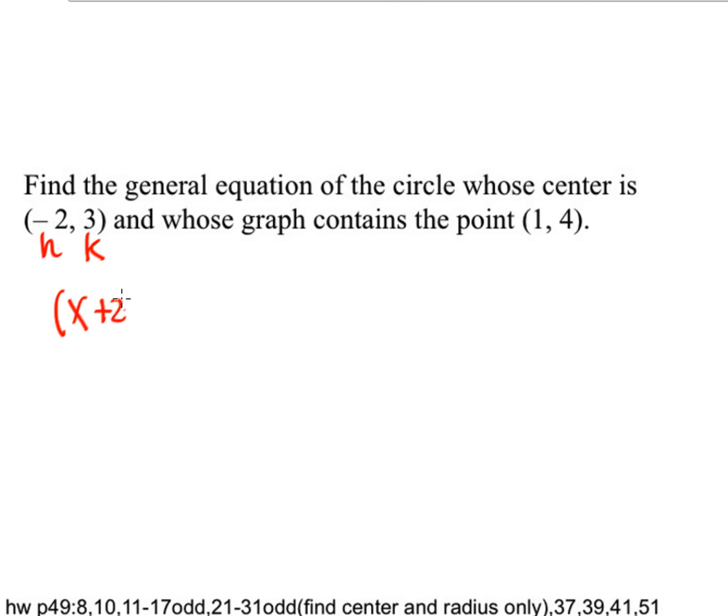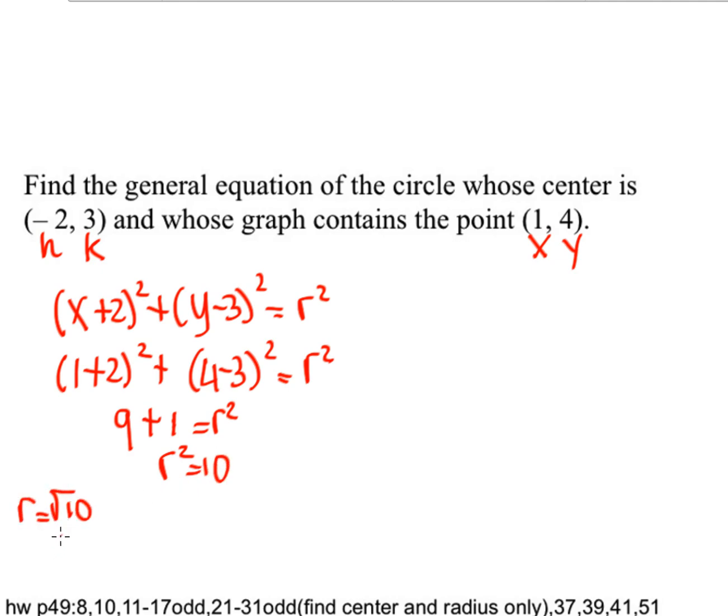Well, one way that you can solve this is to say, well, that's an x and that's a y. So if this is the right equation, then when I plug in x and y, it should work. So if I plug in x and y, then I end up with only one variable. So I should be able to figure out what r² is. So 1+2 is 3, and 3² is 9, and 4-3 is 1² is 1, so r² is 10. So that does mean that the radius would be √10, but I just need to find the general equation. So at that point, I can at least say (x+2)² + (y-3)² = r², and we just figured out that r² was 10.